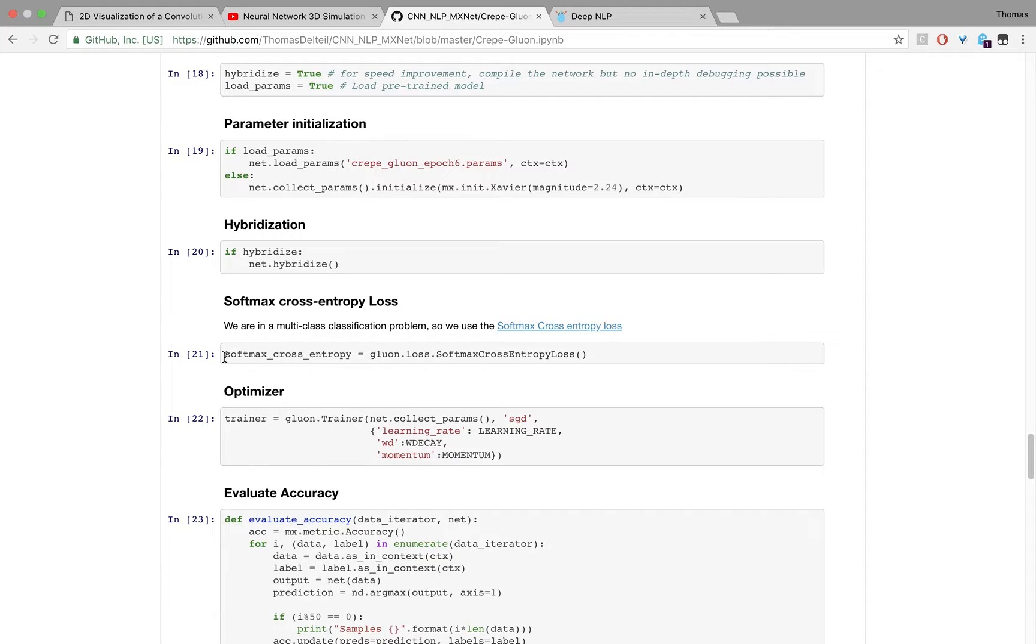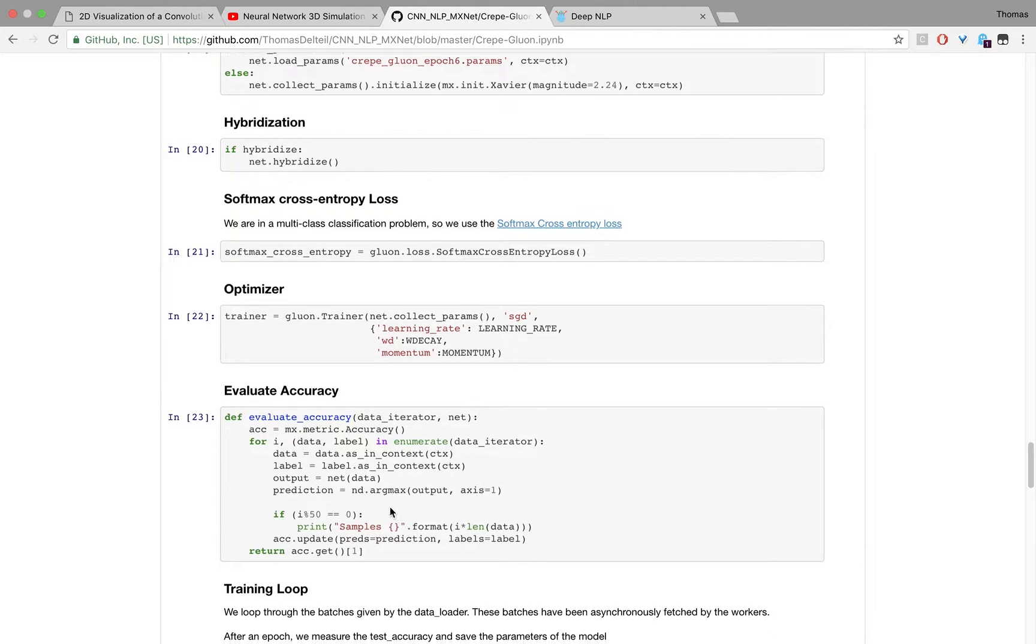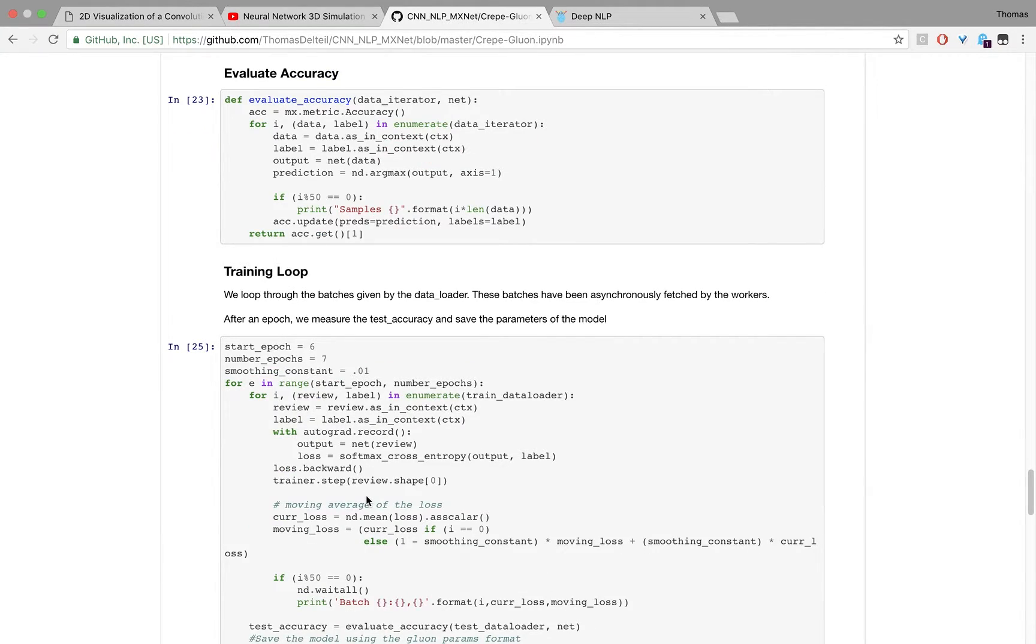For our optimizer, we're going to use the SGD optimization, which is stochastic gradient with momentum. Momentum means if your gradient is going in the right direction, you increase the value of your gradient because it means you're on the right track. It speeds up convergence of training.